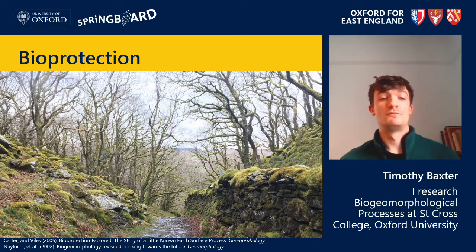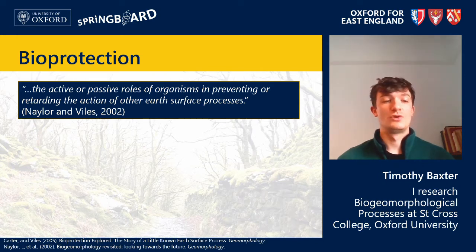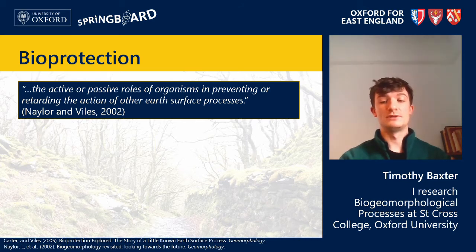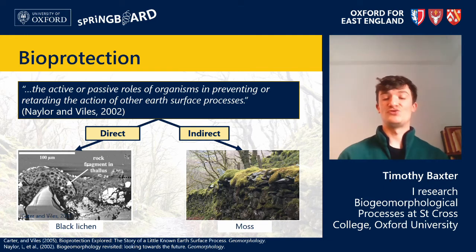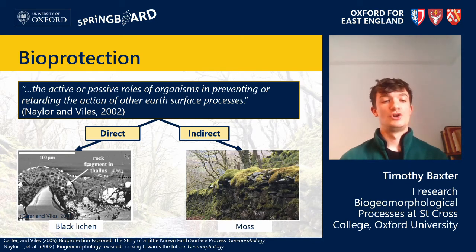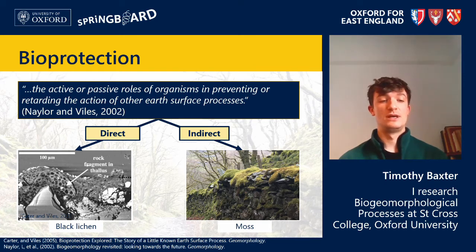The final biogeomorphological process we need to consider is bioprotection. Bioprotection can be defined as the active or passive roles of organisms in preventing or retarding the action of erosional or weathering processes. Like bio-erosion, it has an active or direct element and a passive or indirect element. One way in which plants such as trees directly protect the erosion of sediment is through their roots. Trees that grow on sloped hillsides or verges prevent the erosion of sediments by actively binding the soil together.